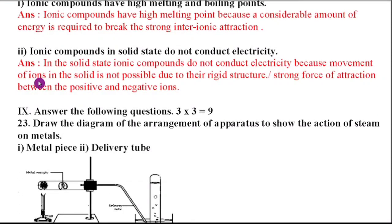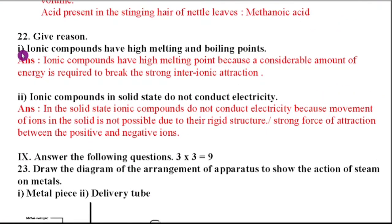22nd question. Give reason. First, ionic compounds have high melting point and boiling points. Ionic compounds have high melting points because a considerable amount of energy is required to break the strong inter-ionic attraction. Second, ionic compounds in solid state do not conduct electricity. Why? Because movement of ions in the solid is not possible due to their rigid structure or strong force of attraction between the positive and negative ions.